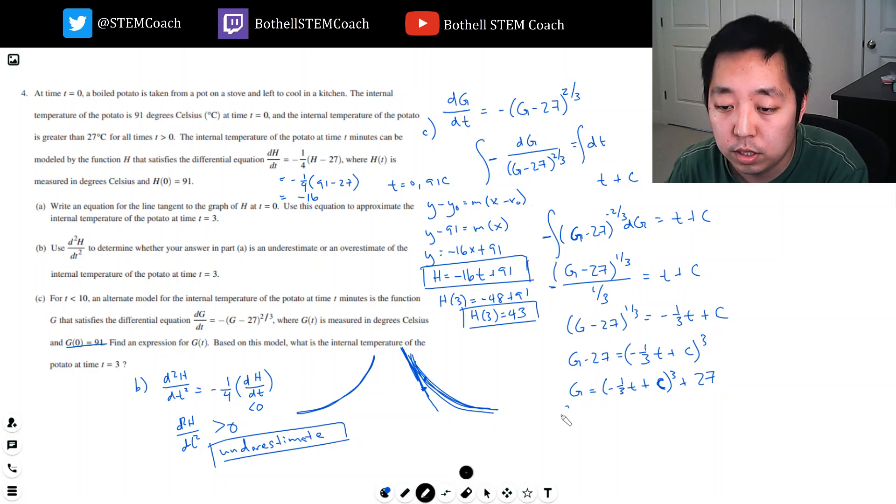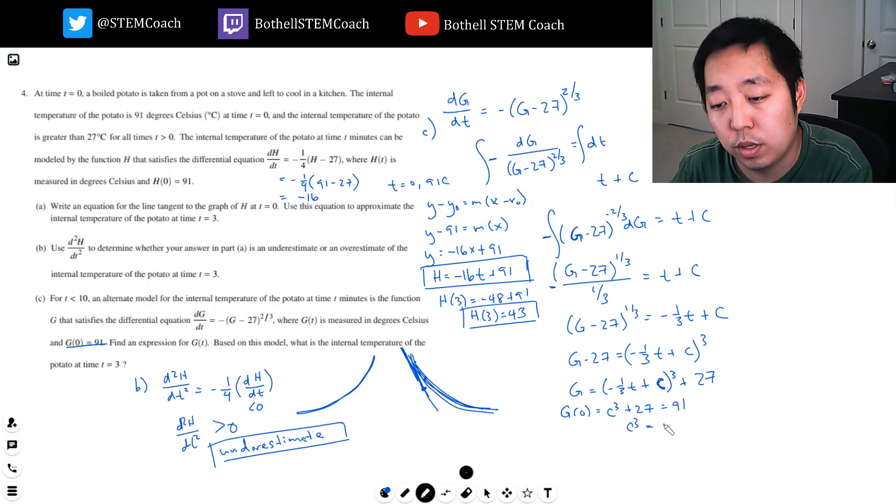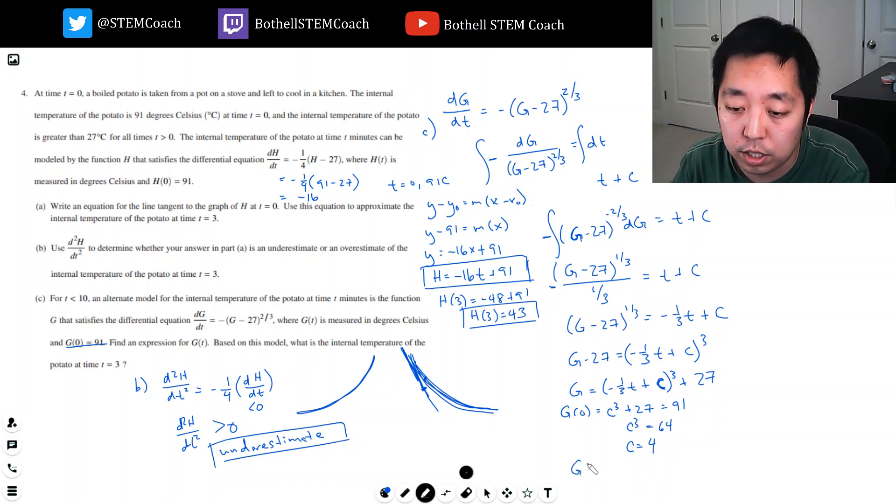So g equals (negative one-third t plus c)³ plus 27. To find the c value, I need an initial condition. In this case, I know g(0) is 91. So g(0) would be c³ plus 27, which equals 91. c³ would equal 64. That means c equals 4 because the cube root of 64 is 4.